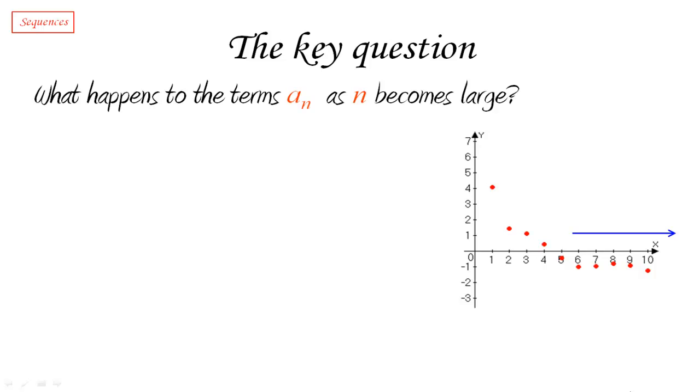Because our interest is in what happens to the function when n becomes big, we may be interested in finding out if there are some properties of this sequence which may not be true at the beginning, but they may be true from some point and all the way to infinity. So we have a word for that.